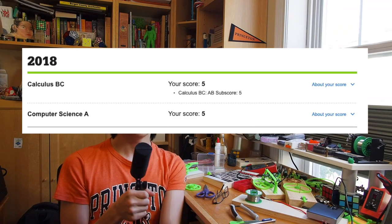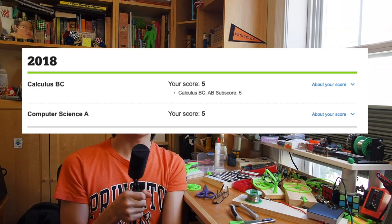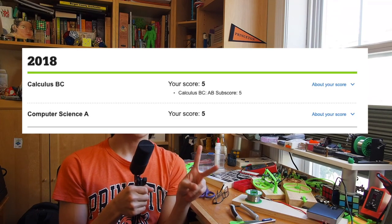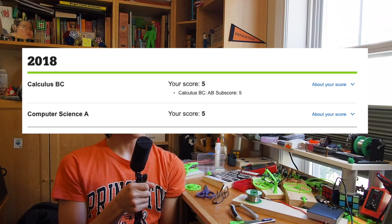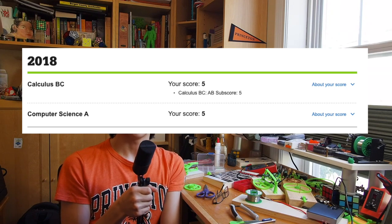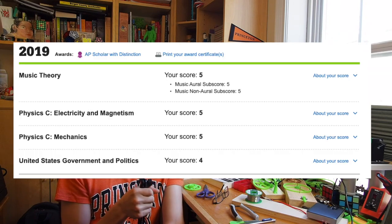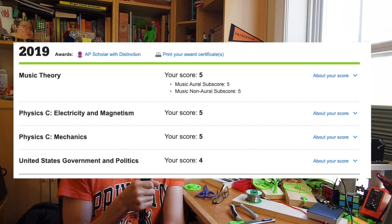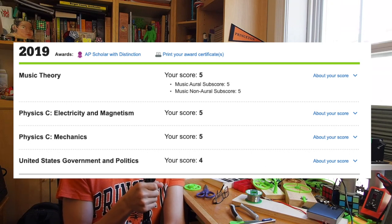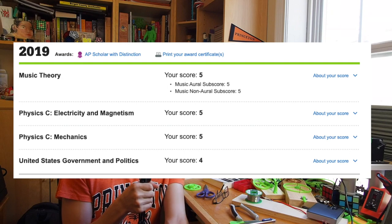In junior year, I took two APs—AP Calc BC and Comp Sci, both of which I got fives on. During my senior year, I took Physics C and got fives on both E&M and mechanics, AP Gov which I got a four on, and AP Music Theory which I got a five on.